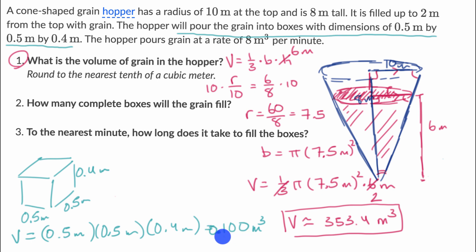So how many tenths of cubic meters can I fill up with this much grain? Well, it's just going to be this number divided by a tenth. Well, if you divide by a tenth, that's the same thing as multiplying by 10. And so if you multiply this by 10, you're going to get 3,534 boxes.